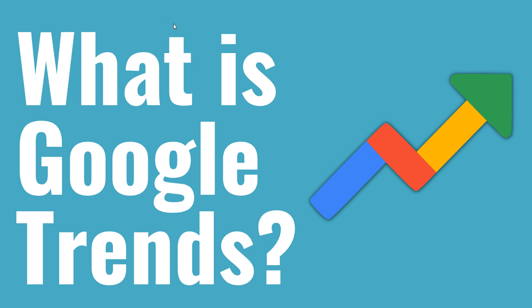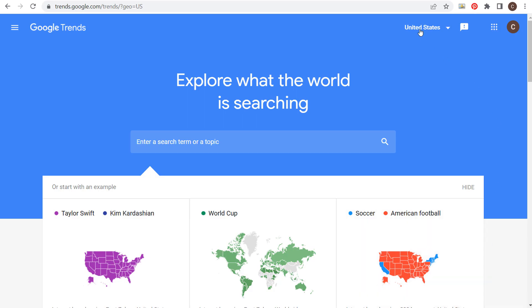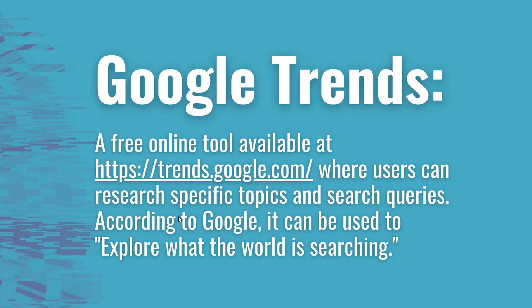Today I'll be answering the question: what is Google Trends? This is what Google Trends looks like. It's a free online tool available at trends.google.com. When you go to this website you're going to see this screen, and users can research specific topics and search queries. According to Google, it can be used to explore what the world is searching.